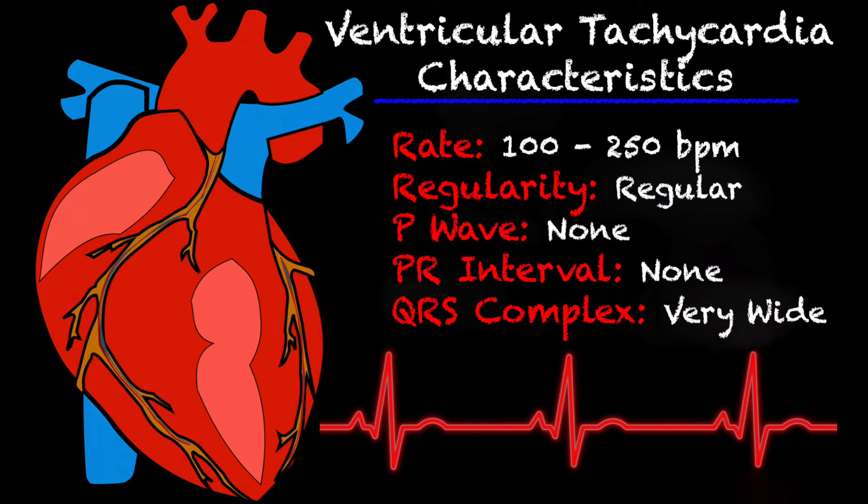Taking a look at some of the ventricular tachycardia characteristics: your rate is going to be between 100 and 250 beats per minute typically. It is a regular rhythm, there is no P wave, therefore there's no PR interval, and your QRS complexes are going to be extremely wide.